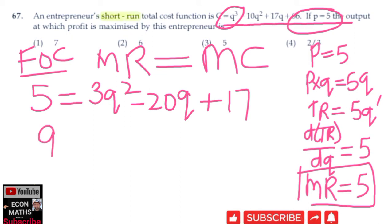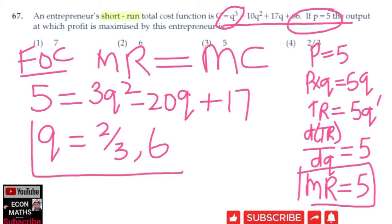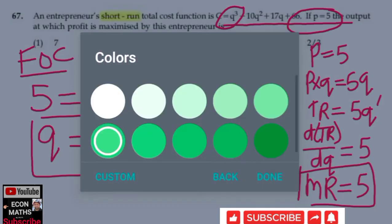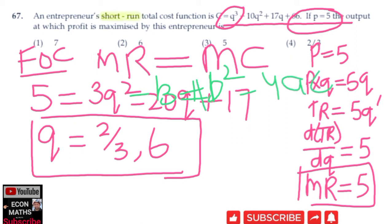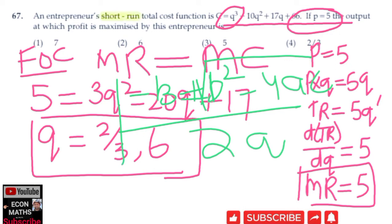Solving for Q, we get two positive values: Q = 2/3 and Q = 6. We use the quadratic formula — that is (-B ± √(B² - 4AC)) / 2A — by writing the equation in standard form. Applying this formula gives us the two optimal values of Q: 2/3 and 6. From the first order condition we now have these two candidate output levels.